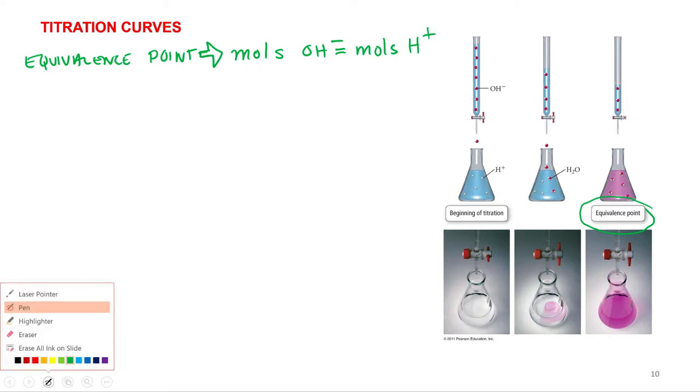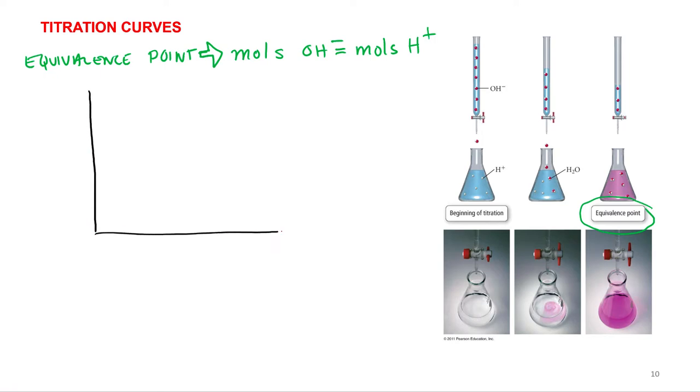You've already done one in the lab, but in general this is what they look like. So what you do is you plot pH as a function of volume. And the actual shape and what the titration is going to look like is going to be different. So what we're going to do for this first one is titrate a weak acid with a strong base. That means the strong base is my titrant, that's what goes in the burette, and my weak acid is in the sample.